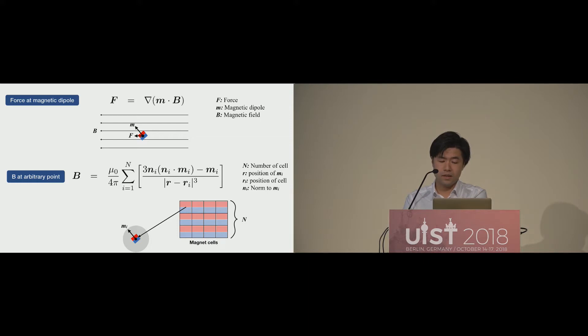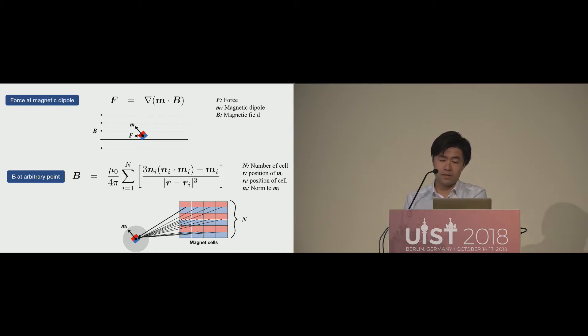Here B at M is calculated with this formula. Then we can gather all part B from each cells of magnet. Then we can get the summary of B from the other magnet. Using those two formulas, we can solve the force between the magnets. The dipole method converts those into another approximate expression after differential operation like this.